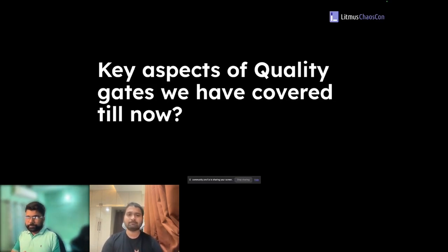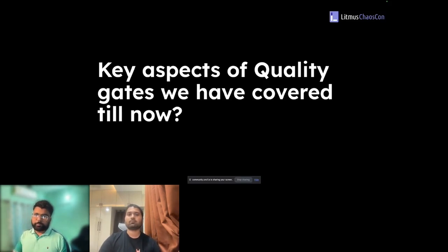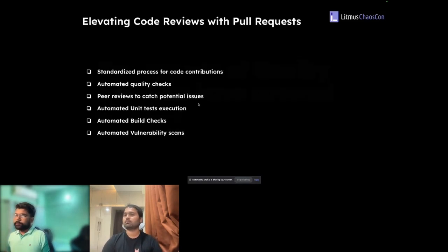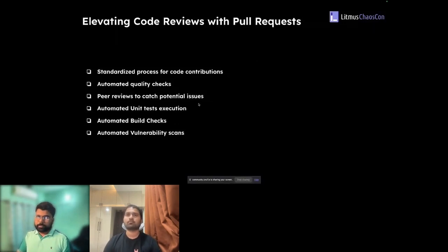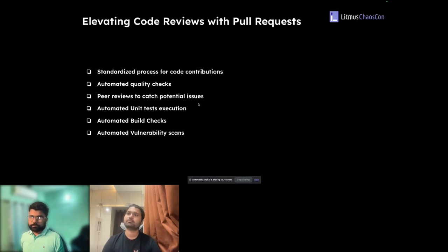That was the section where we discussed the challenges you will face when starting a new project or maintaining an existing one if you don't look at these perspectives. Now we'll talk about the different aspects of quality gates we have implemented. We have divided this into two parts: having quality gates as part of pull requests, and having quality gates as part of your release process with end-to-end and API testing. In this section we'll talk about enhancing the code review experience around pull requests.